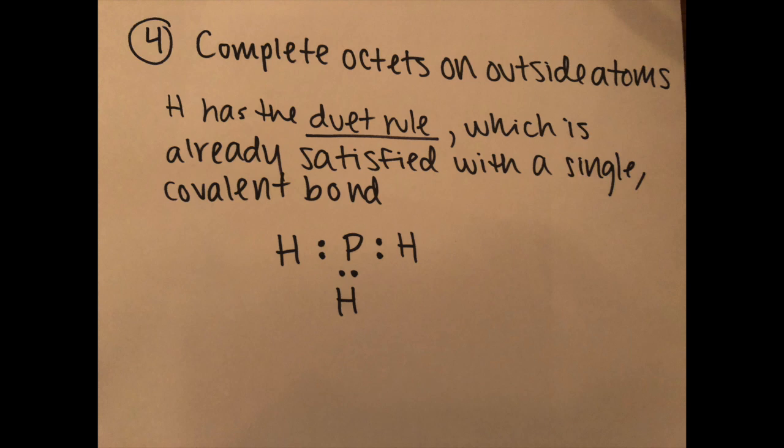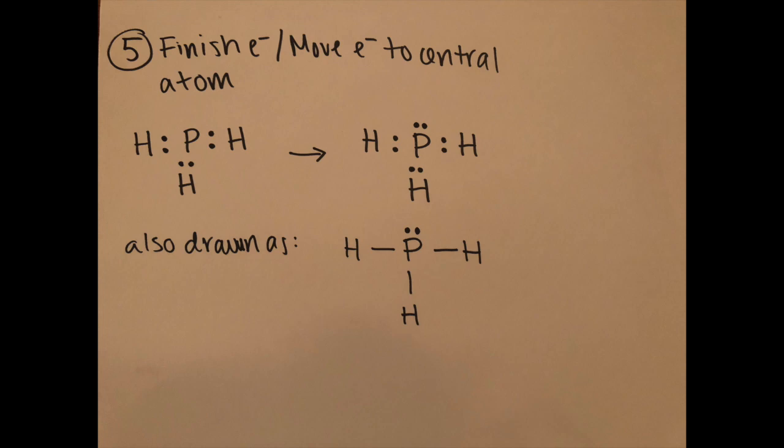In step four complete the octets on outside atoms. And so looking at this we don't have to do any steps because hydrogen already has the duet rule satisfied, it has two electrons both coming from that single covalent bond. And so thus there are no outside atoms that need to be satisfied and given more electrons.